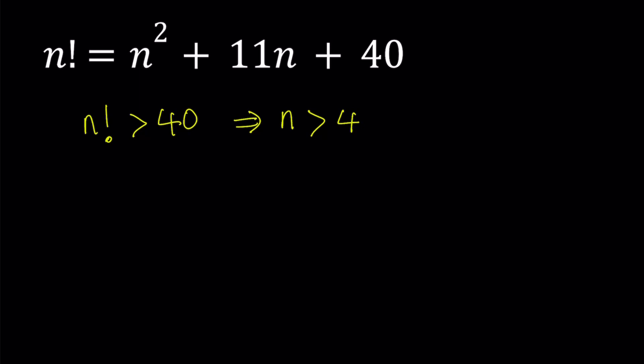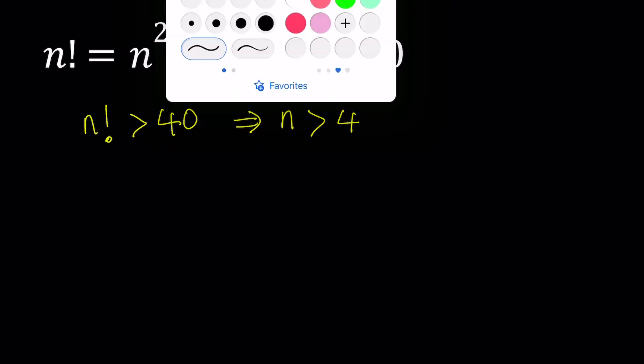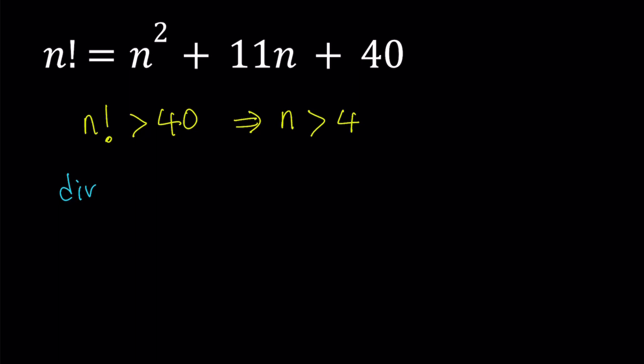Let's divide both sides by n. And why are we doing that? Because that's going to allow us to use the divisibility criteria. And it also shows us something interesting.